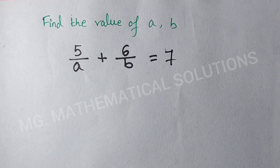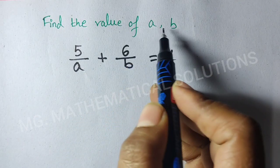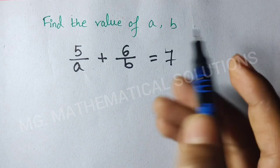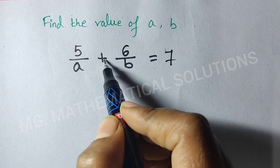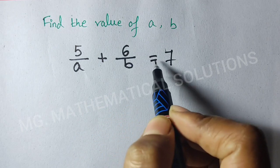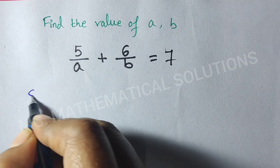Hi students. Today's question is: find the value of A and B of the equation 5/A plus 6/B equal to 7. Let's see the solution.